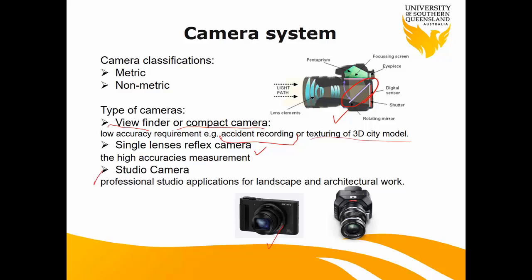Studio cameras are very bulky and heavy but give you the ultimate resolution. They have very good options for translation between lenses and focus, giving sharp, high-resolution images. As surveyors, we probably wouldn't use them — they're mostly used by landscape or architectural photographers taking very high-resolution photos of buildings. We don't need a pretty image; we need to do measurements, so we go with SLR cameras.